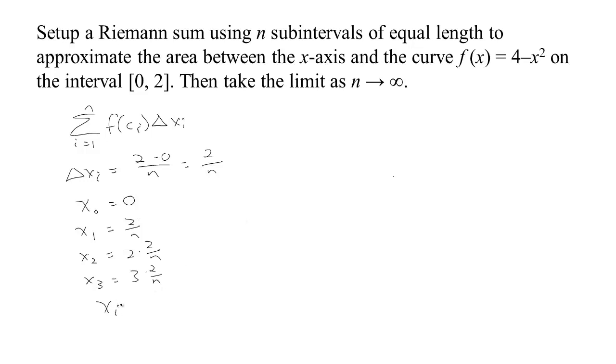At this point you can see a pattern emerging in the endpoints of the intervals. The i-th endpoint is just going to be i steps over from 0, so you have i times the step size, which in this case is 2 over n.